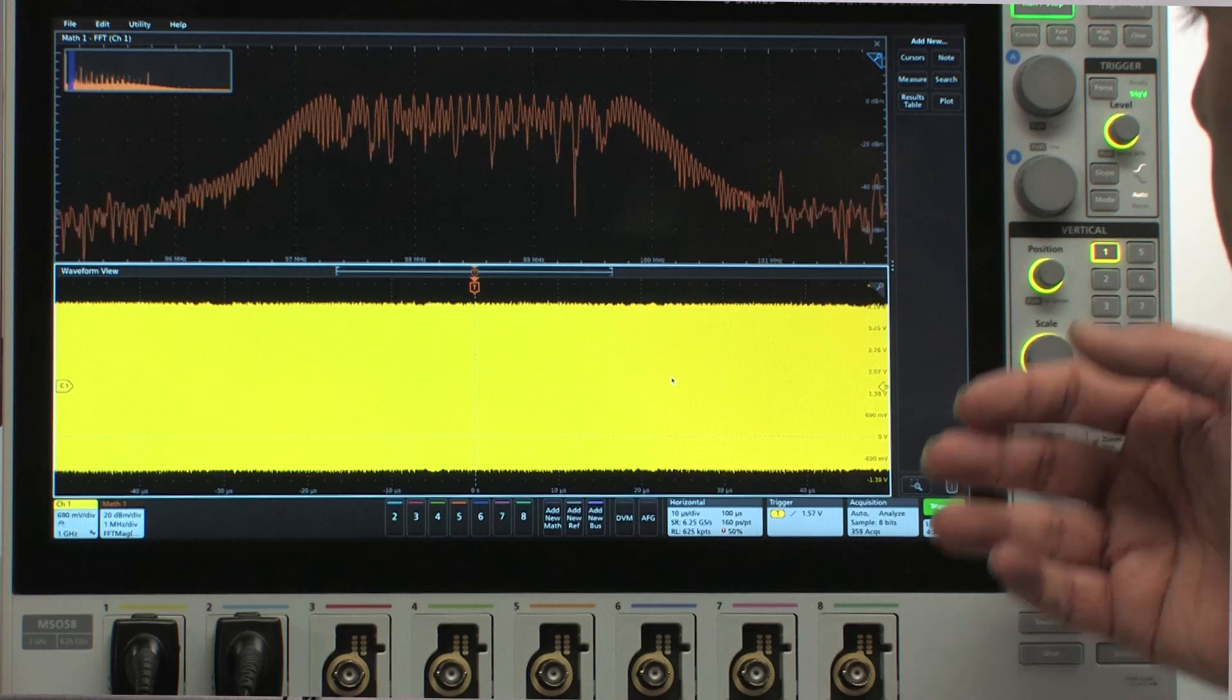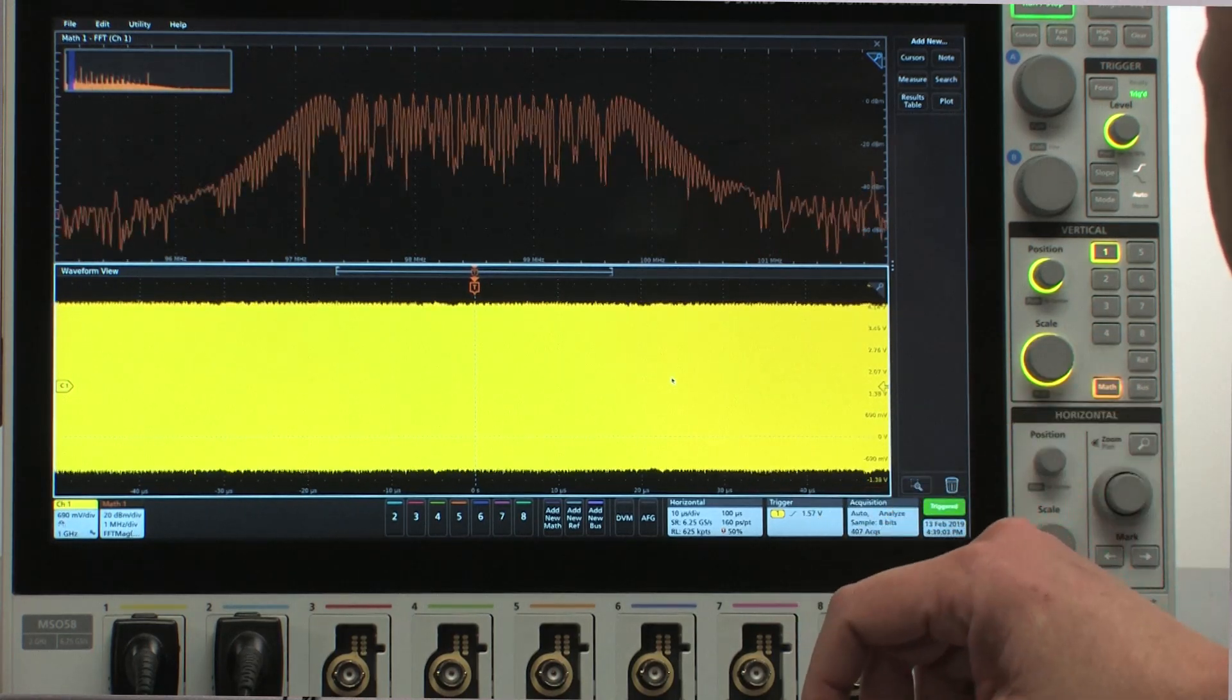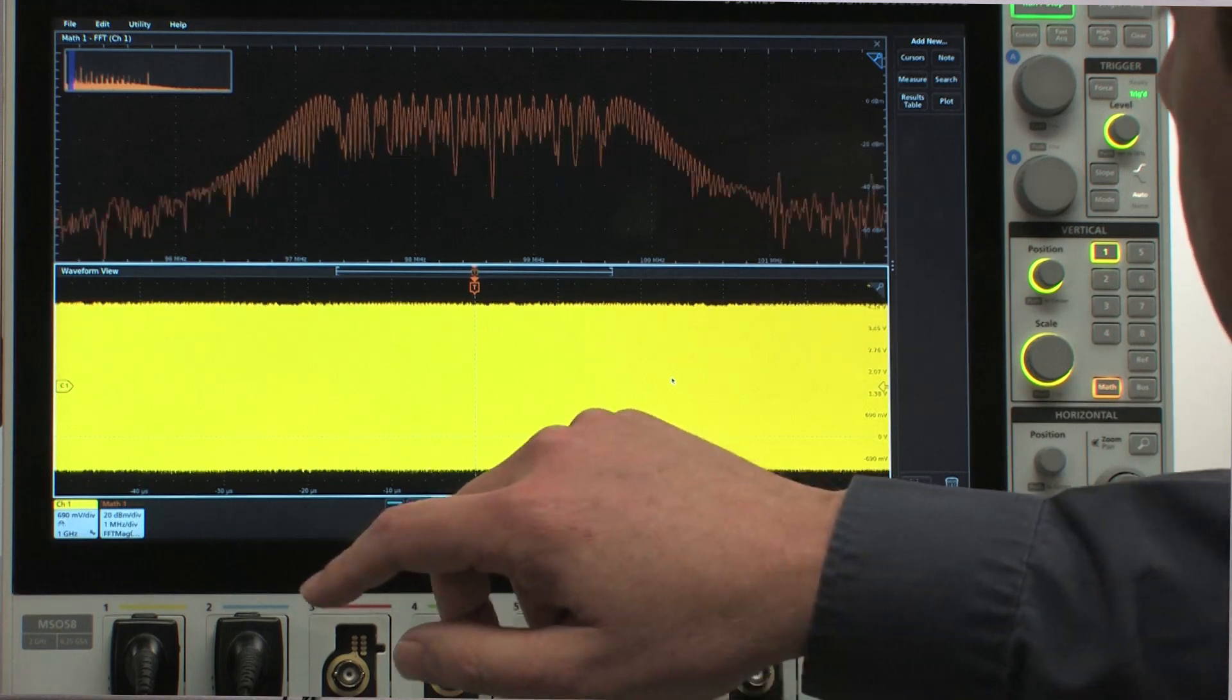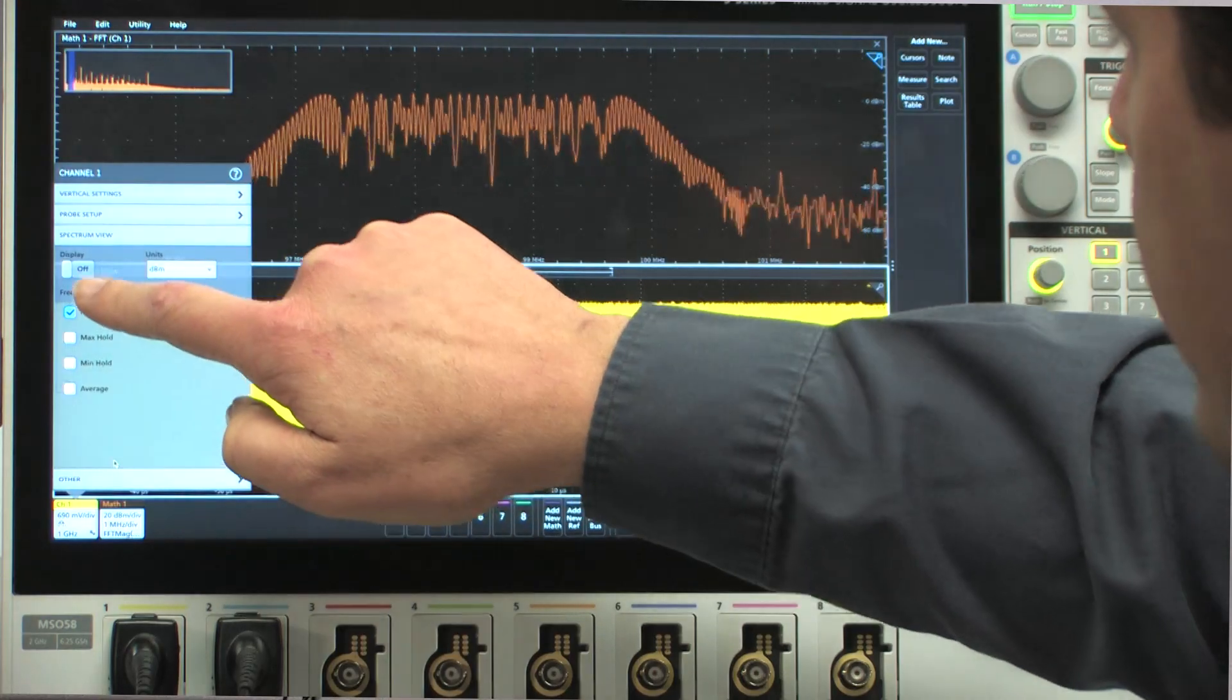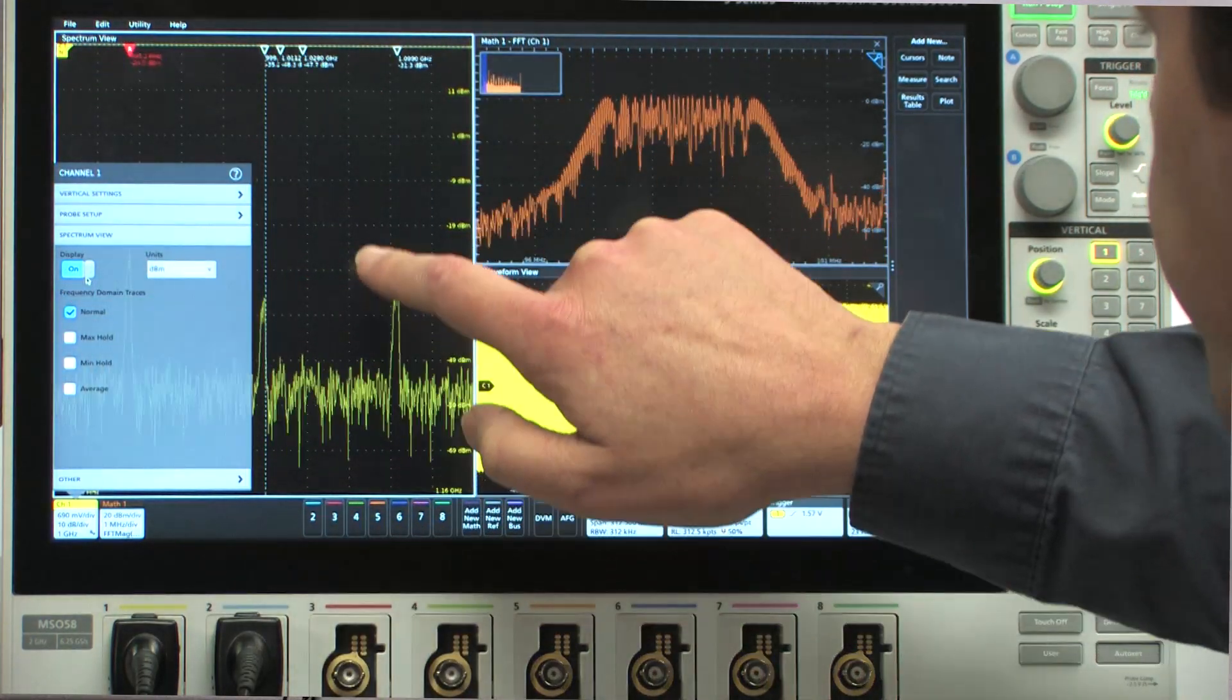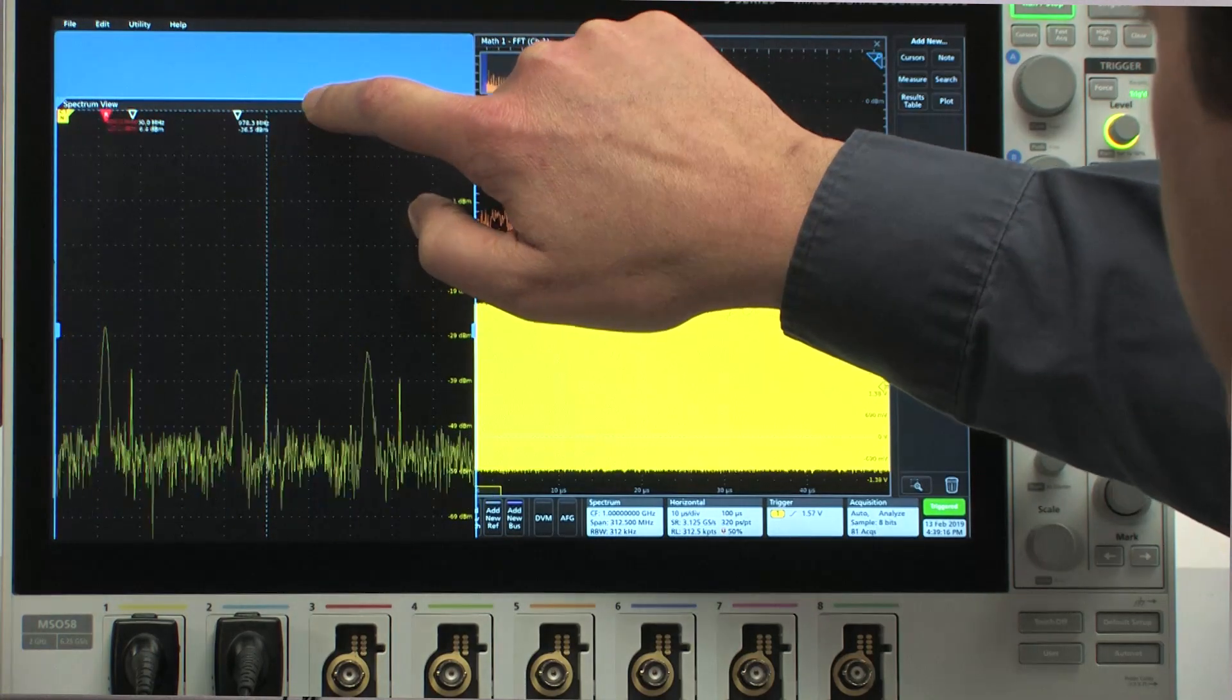Spectrum View is a new feature that allows any flex channel on a five or six series to be configured as an analog channel, digital channels, or a spectral view of the analog input. In this case, we're only going to look at one channel, so I select channel one, go to Spectrum View, and turn it on.